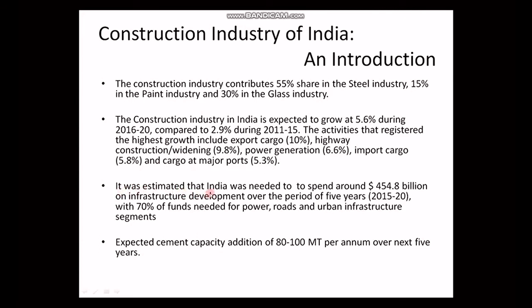It was estimated that India needed to spend around 454.8 billion US dollars on infrastructure development over a period of 5 years, between 2015 and 2020, with 20% of funds needed for power, roads, and urban infrastructure segments. It is expected that cement consumption will increase by 80 to 100 metric tons per annum over the next 5 years. It is very clear that construction is a booming industry in India, and we need to understand some key concepts of construction.